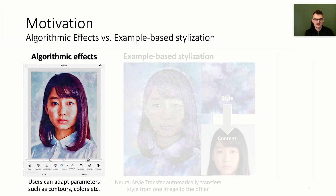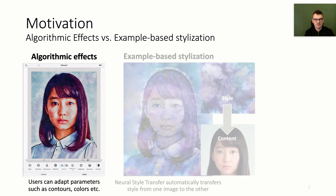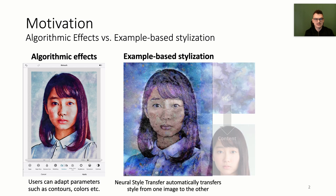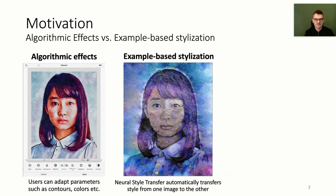For many years, algorithmic computer vision filters have been used to create impressive stylizations. Those filters offer a high degree of freedom for the user to adapt details of the image, like contours or colors. More recently, machine learning-based approaches like neural style transfer make it possible to create rich stylizations from examples with minimal human intervention.